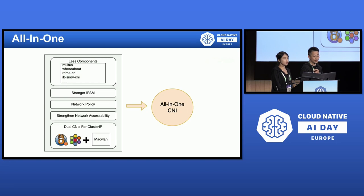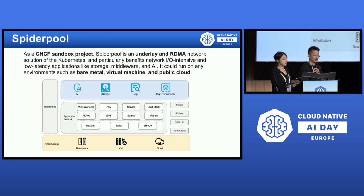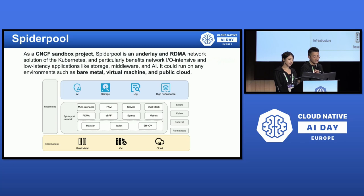So how could we make MacVLAN powerful enough to own more features like Calico? We may expect it to be all-in-one. We developed an open source project called SpiderPool to implement an all-in-one solution. As a CNCF sandbox project, SpiderPool is an underlay and RDMA network solution for Kubernetes. It can run on any environment such as bare metal, virtual machines, and public cloud. On one hand, it implements nearly all CNI features that Calico does. On the other hand, it can better implement the secondary network card to cooperate with Calico, Cilium, and Kubernetes.